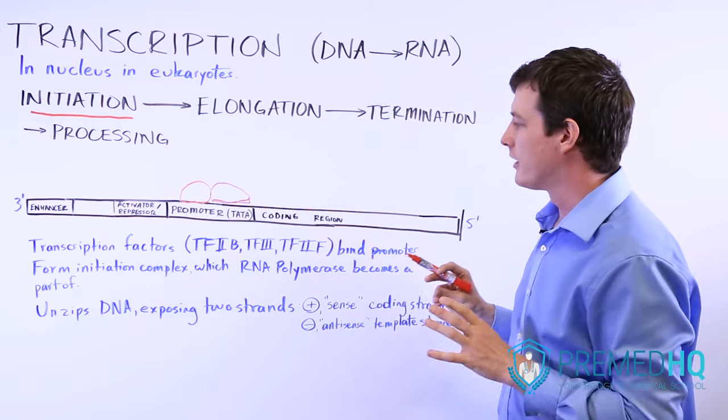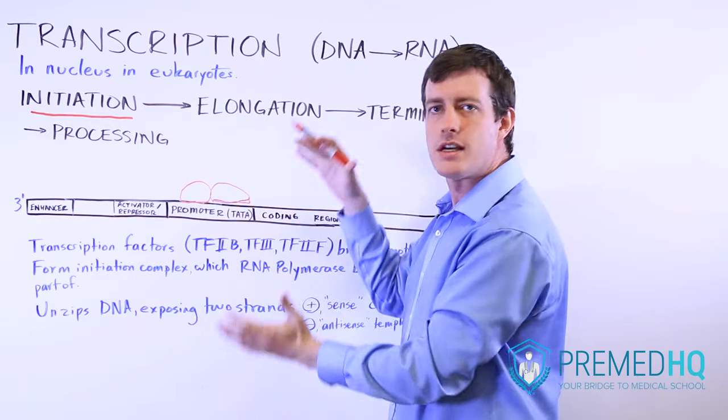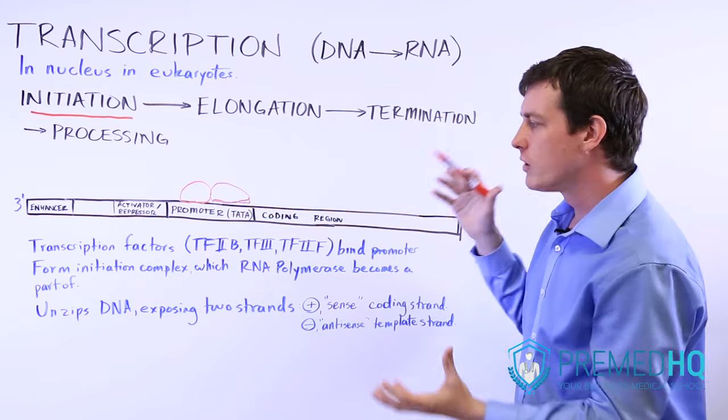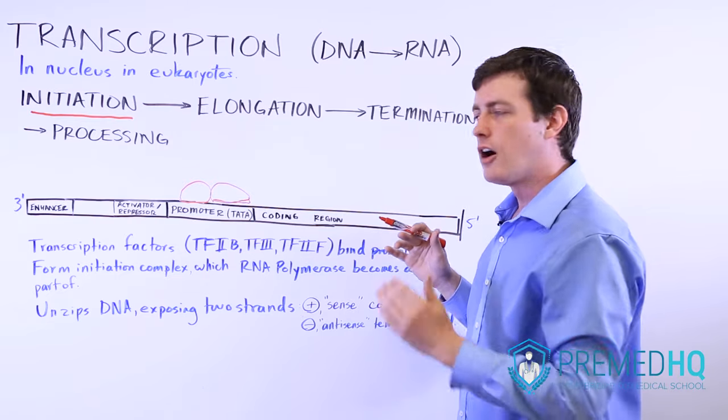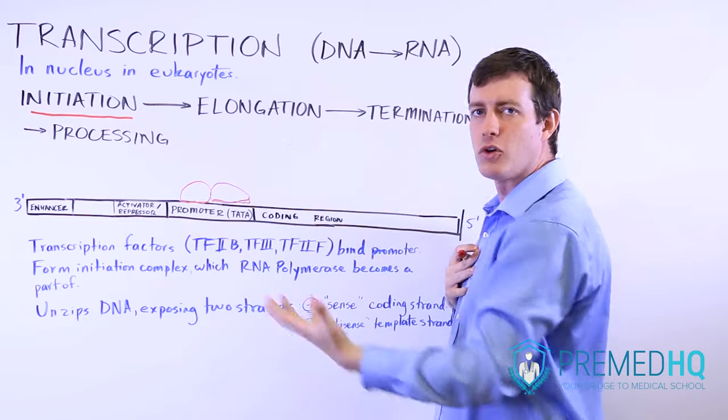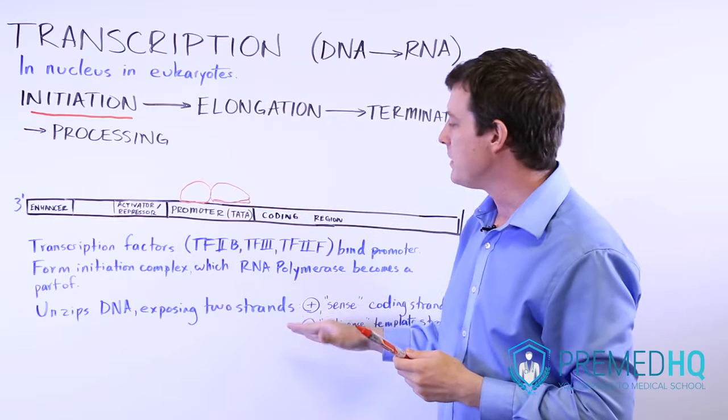And when that occurs, the RNA polymerase will help unzip this double-stranded DNA and form a transcription bubble. And the transcription bubble will include two different strands that are then very useful in the elongation process and are necessary for it to continue.